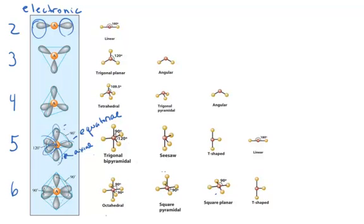In the case of the trigonal bipyramidal, if all of the regions have bound atoms, the molecular geometry is named the same: trigonal bipyramidal. However, if you have one non-bonding pair of electrons, it will locate in an equatorial position. This is because the non-bonding pairs of electrons take up more region of space since they're not drawn away from the central atom — they reside closer to the central atom. The equatorial position allows for the most space, being 120 degrees away from two others even though it's only 90 degrees from the two axial positions. This molecular geometry is called seesaw.